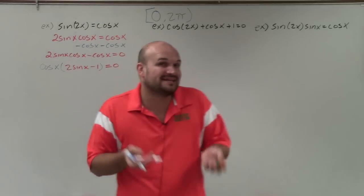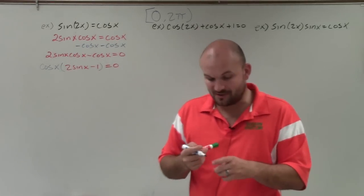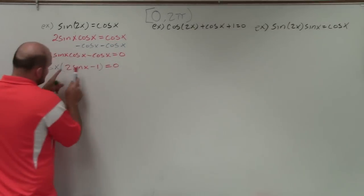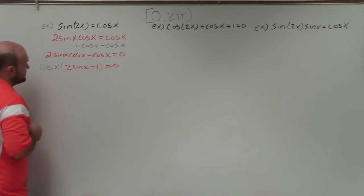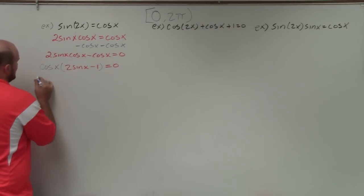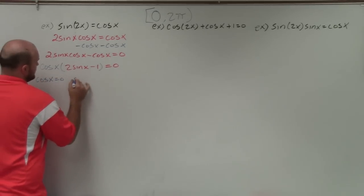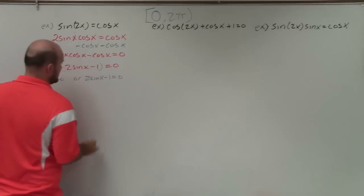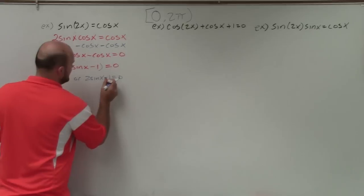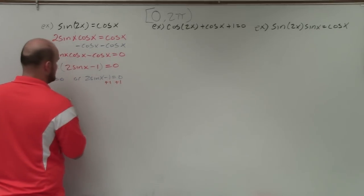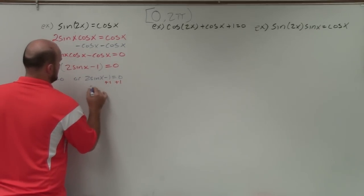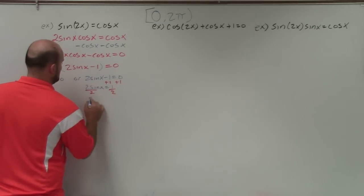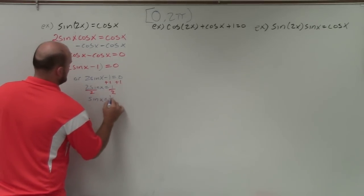Now I have the product of two expressions set equal to 0, so I can apply the zero product property. Since this times this equals 0, one or both must equal 0. I set them both equal to 0: cosine of x equals 0, or 2 sine of x minus 1 equals 0. The second equation I'll solve with inverse operations — adding 1 and dividing by 2 — to get sine of x equals 1 half.